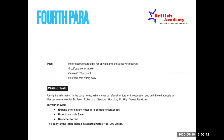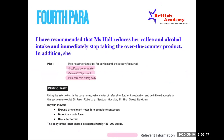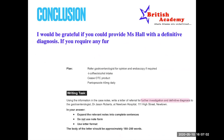The fourth paragraph is straightforward — there are only three pieces of information in the plan: advise to decrease coffee and alcohol intake, cease the OTC product, and pantoprazole 40 mg daily. The fourth paragraph reads: 'I have recommended that Ms. Hall reduces her coffee and alcohol intake and immediately stops taking the over-the-counter products. In addition, she has been prescribed pantoprazole 40 mg daily.' Then comes the fifth and final paragraph where you just conclude.